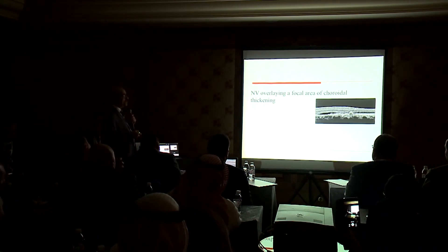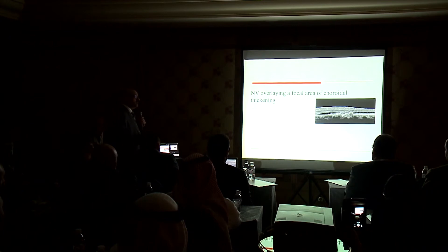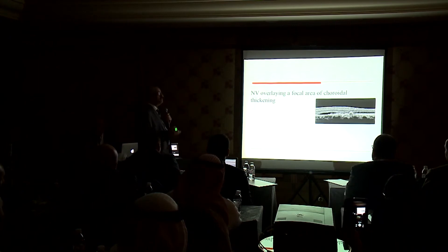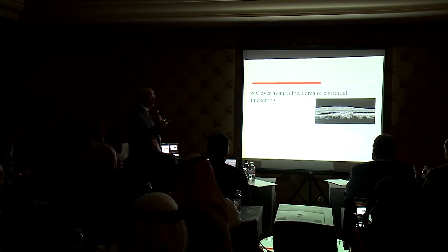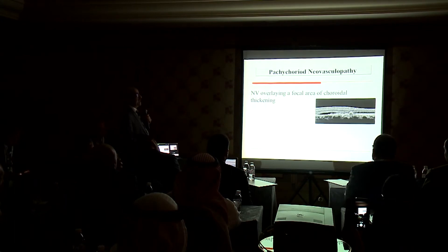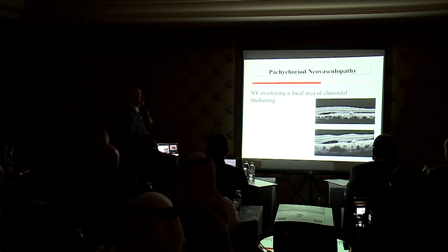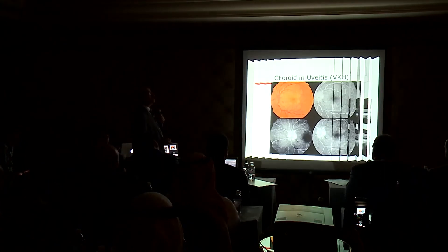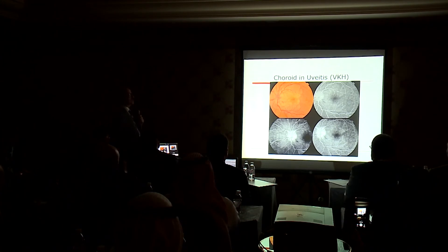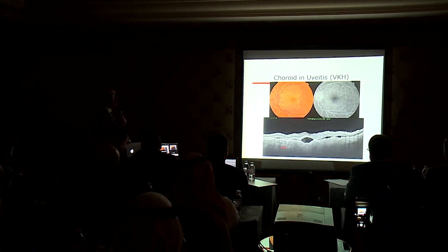NVE overlying a focal area of choroidal thickening is what we call pachychoroid pigment epitheliopathy. Why pachychoroid? Because the choroid is thick, pushing the retinal pigment epithelium even in old age — in the sixties — and we can get choroidal neovascularization on top of this. This is the new nomenclature called pachychoroidopathy pigment epitheliopathy or pachychoroidopathy choroidal neovascularization. In Harada disease, we must look at the choroid because the pathology is there.